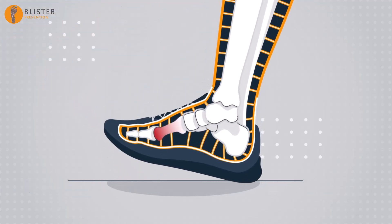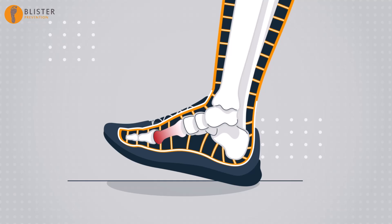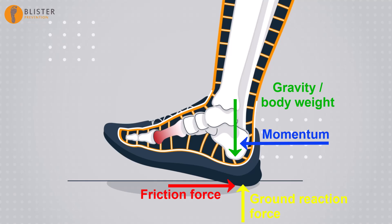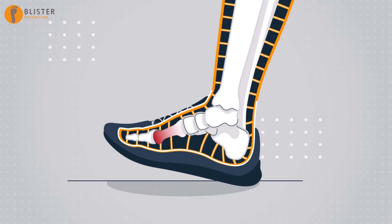At heel strike, the foot approaches the ground at an angle which is not purely vertical or horizontal, much like an aeroplane landing on a runway. The vertical direction of touchdown causes compression of all the shoe and foot materials under the heel bone, and to a lesser extent at the back of the heel. The horizontal direction of touchdown creates shear forces in these compressed soft tissues. Essentially, the calcaneus is moving down and forward, but the skin surface doesn't follow because friction is holding these in-shoe interfaces stationary. The soft tissues, sandwiched between skin and bone, bend and stretch — they undergo shear deformation.